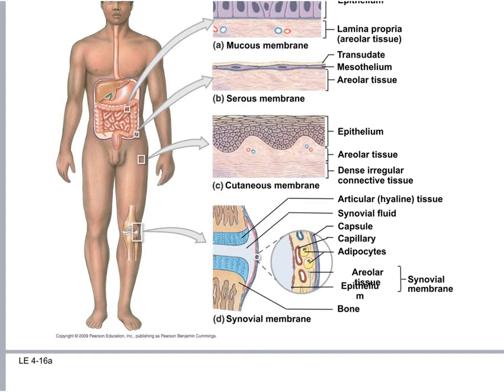During lecture, I'm going to finish up muscle tissue and neural tissue, which is short. Then we're going to go through Chapter 5, the integumentary system, which is one of the shorter systems we discuss this semester.